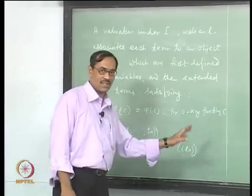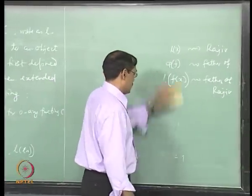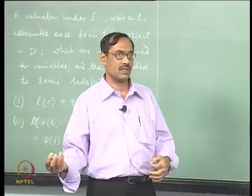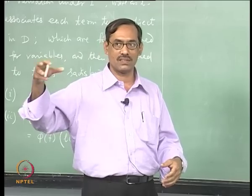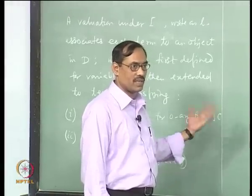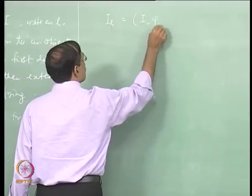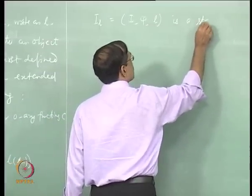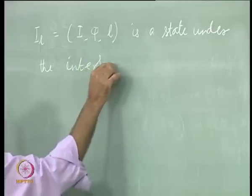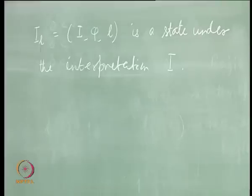This formulation is very important; slowly we will realize where it will come. We have started with one interpretation having two components: one nonempty set and one map which takes predicates and function symbols to relations and partial functions. Then we have brought up this evaluation l. We have three components now. We will say that (I, l) — meaning (D, φ, l) — is a state under the interpretation I.